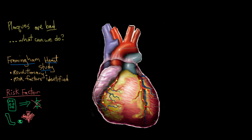The Framingham Heart Study showed us that there are two major types of risk factors: modifiable risk factors and non-modifiable risk factors. This is really important — it means we could modify something about our lives to lower our risk of coronary artery disease, but the flip side is that there are non-modifiable things too that we simply can't change.